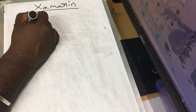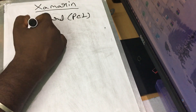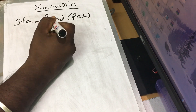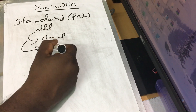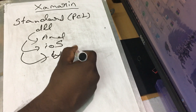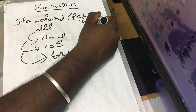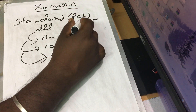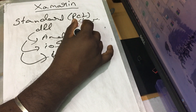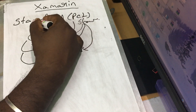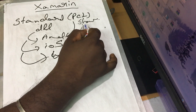.NET Standard and PCL are different approaches. The .NET Standard project creates a DLL, and that DLL is referenced by the platform-specific projects. So the .NET Standard project is different from a Shared project in how it is compiled and referenced.